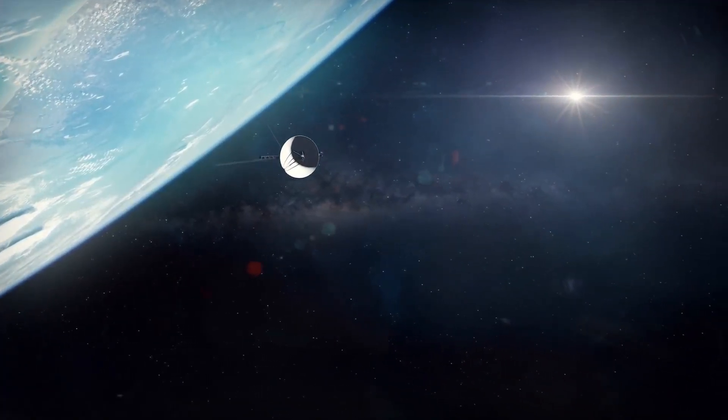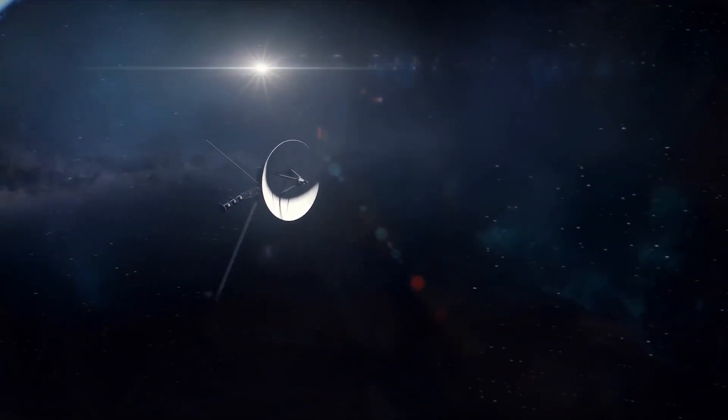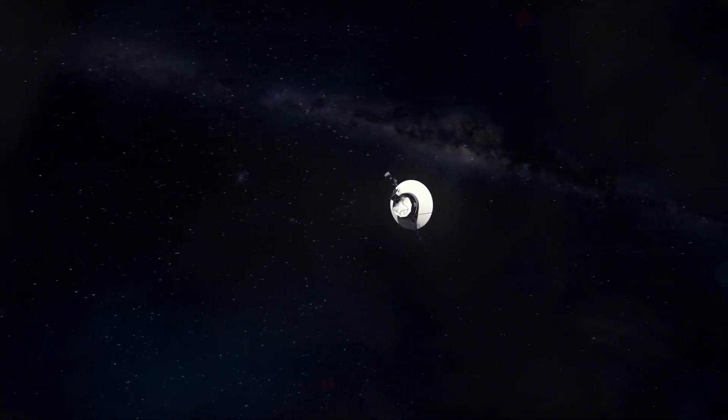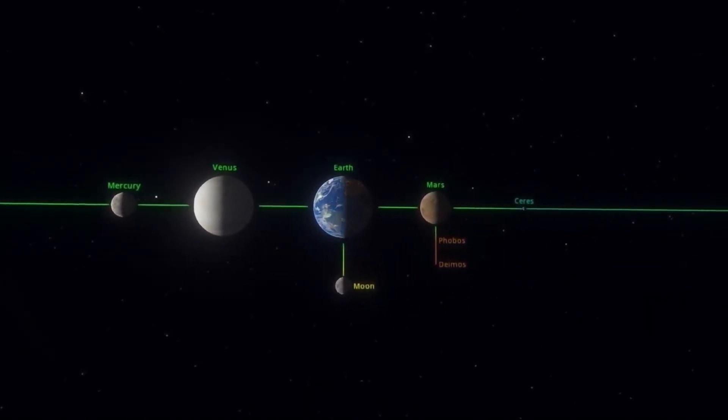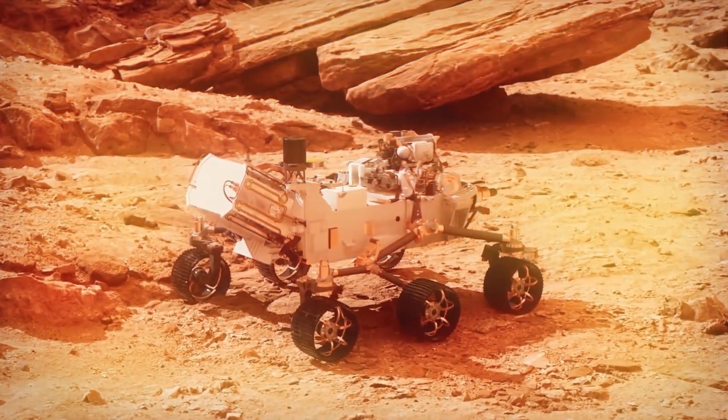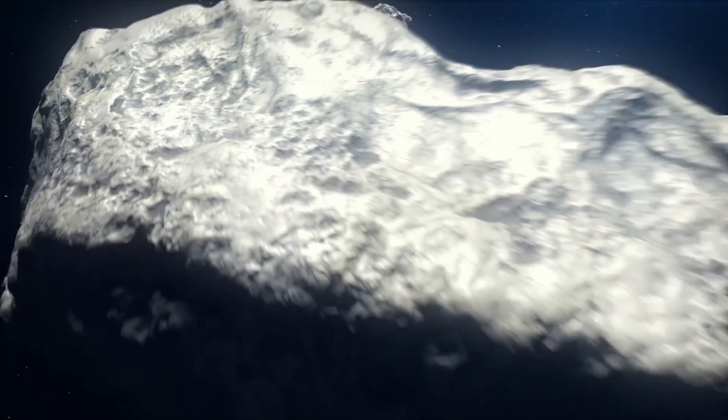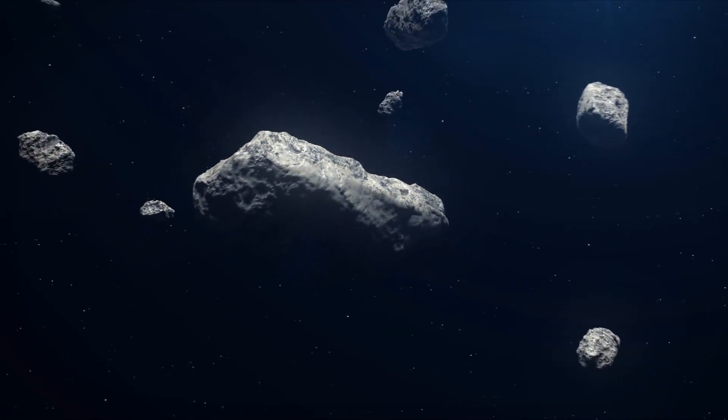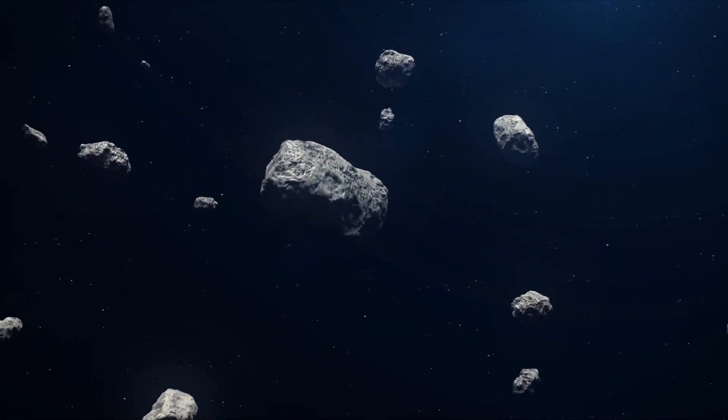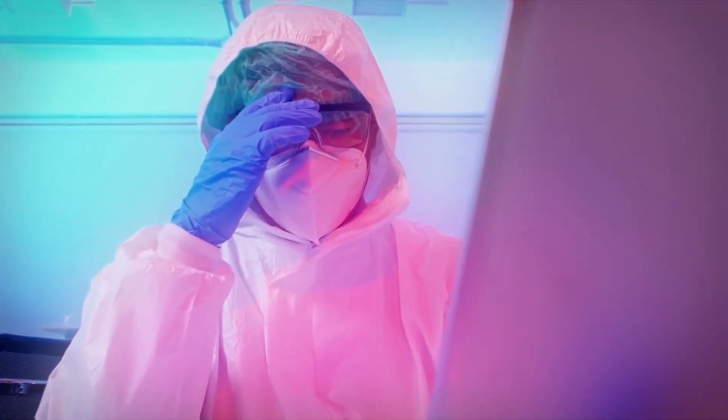It would seem that the solar system has been studied by mankind, if not completely, then in full detail. The planets have all been identified for a long time, rovers have been traveling on Mars for a while, comets and asteroids have been almost counted by name, and even the soil from one of them was taken and delivered to Earth for research. But this is where the scientists were dumbfounded.